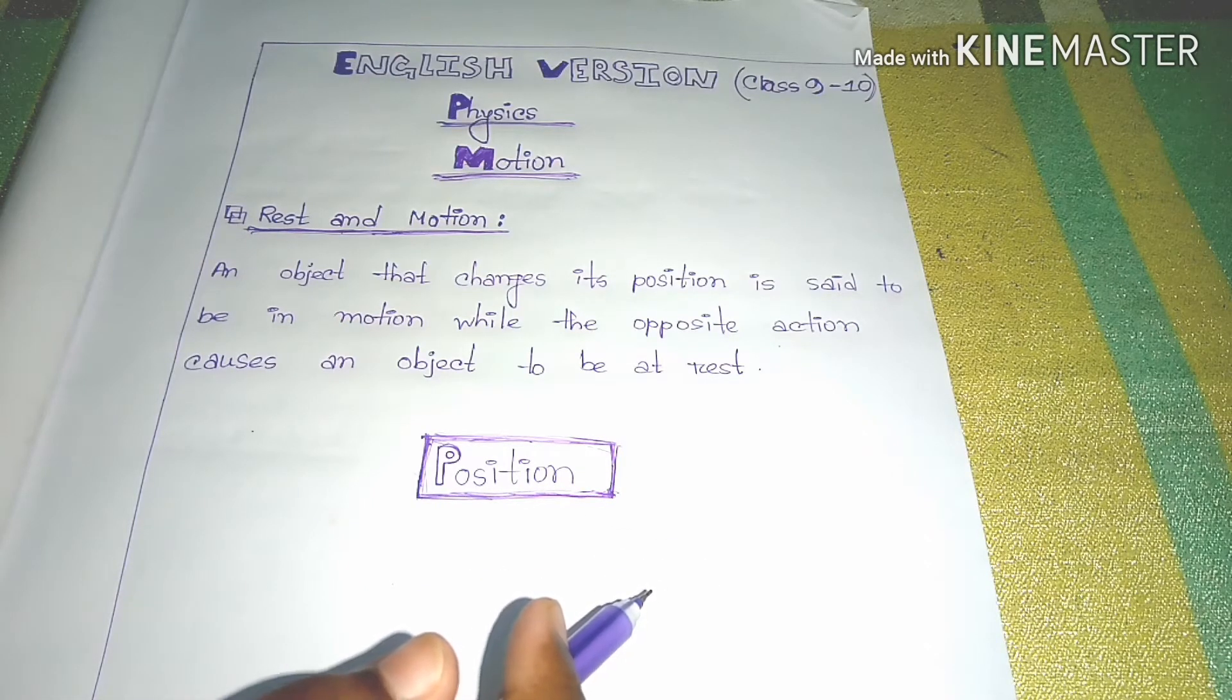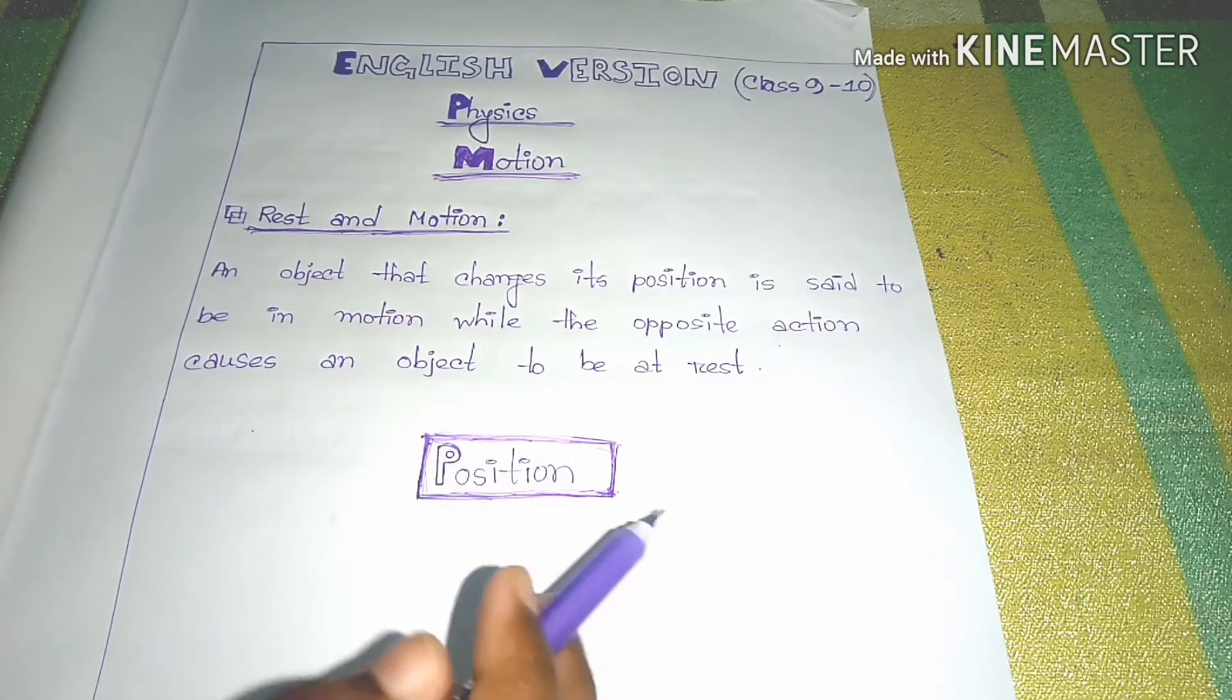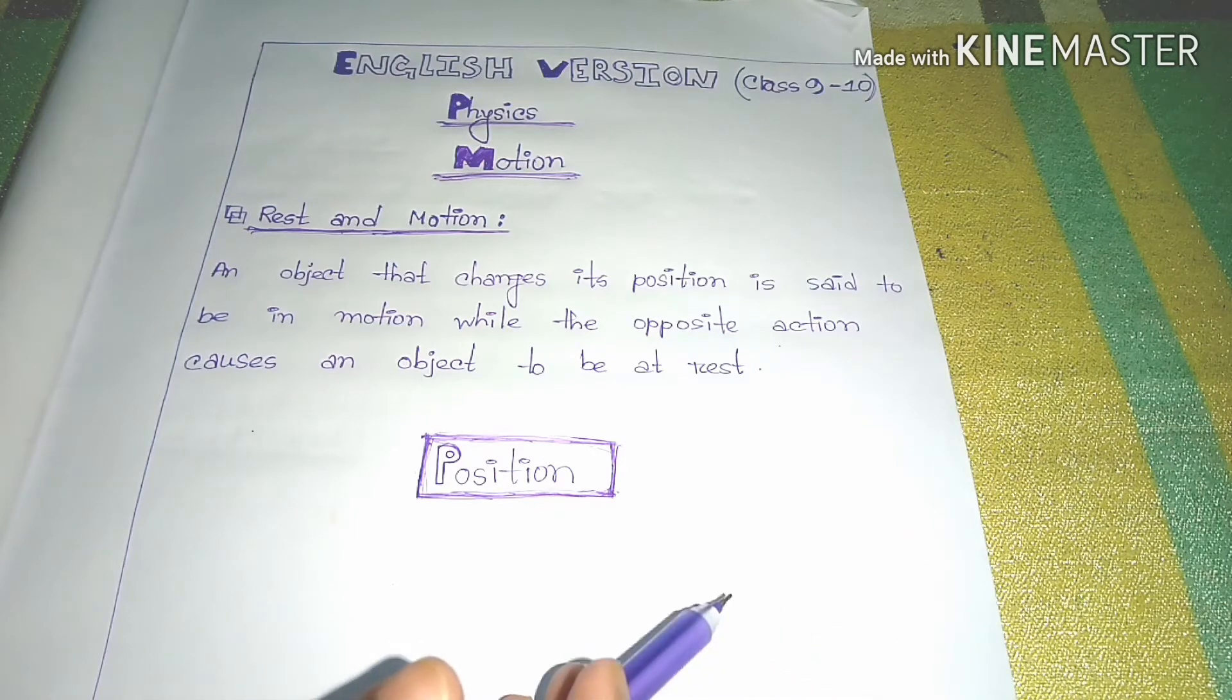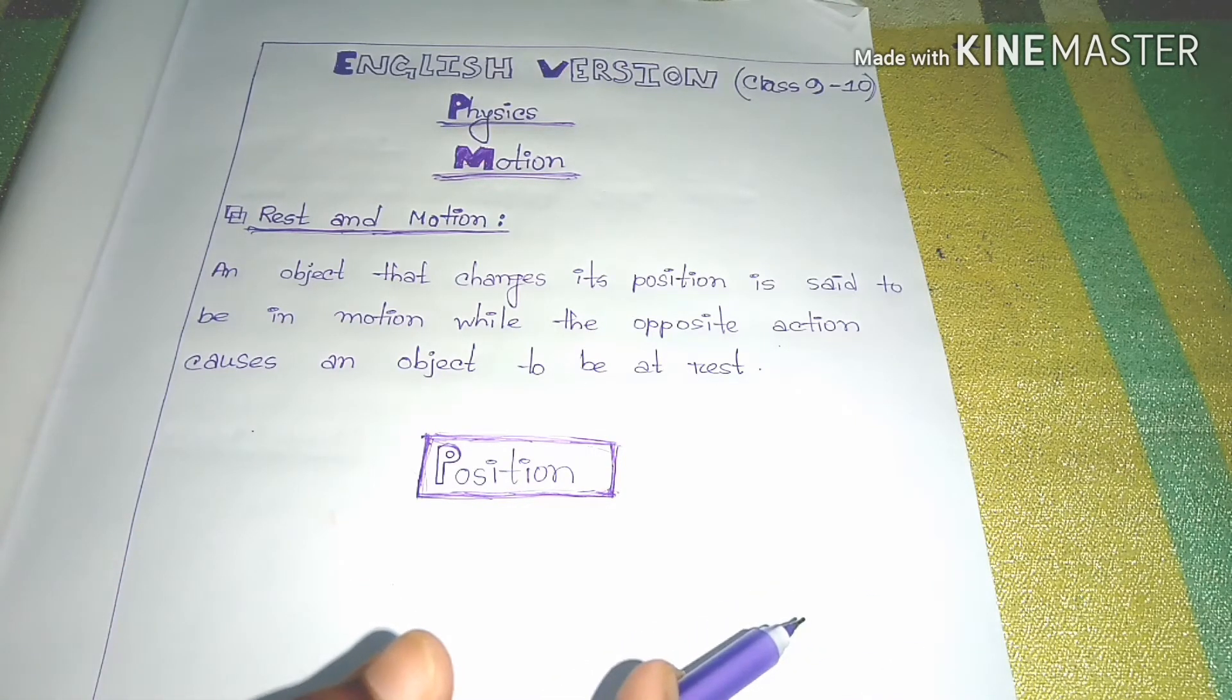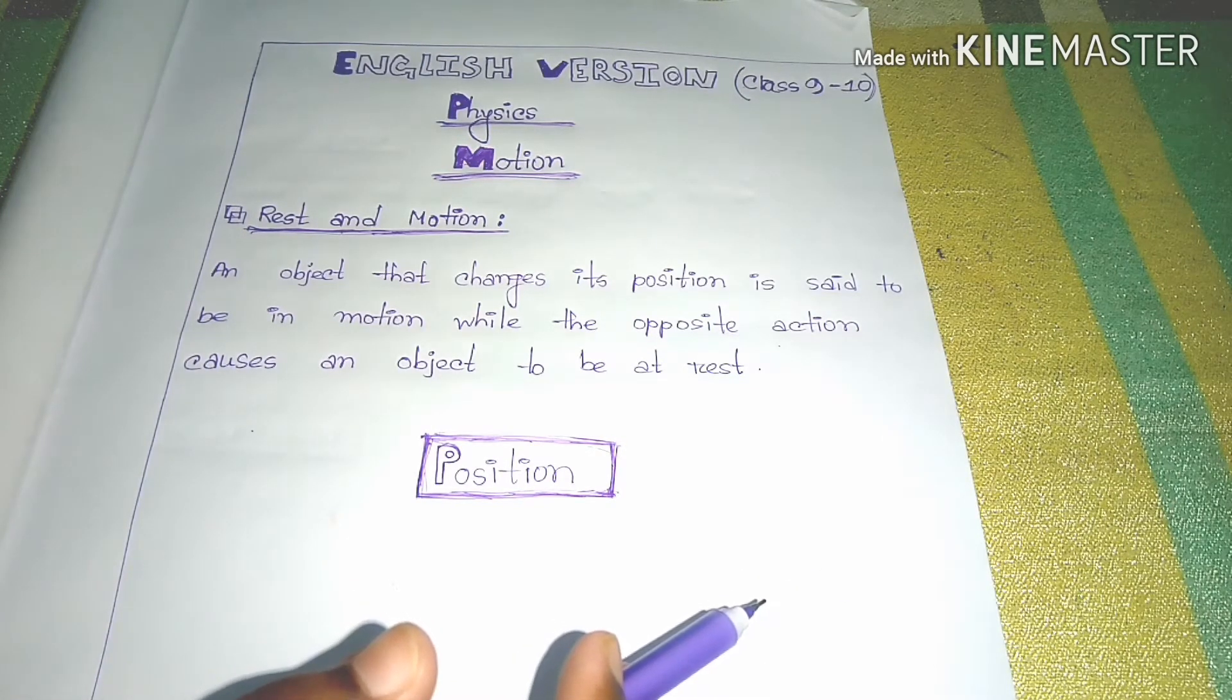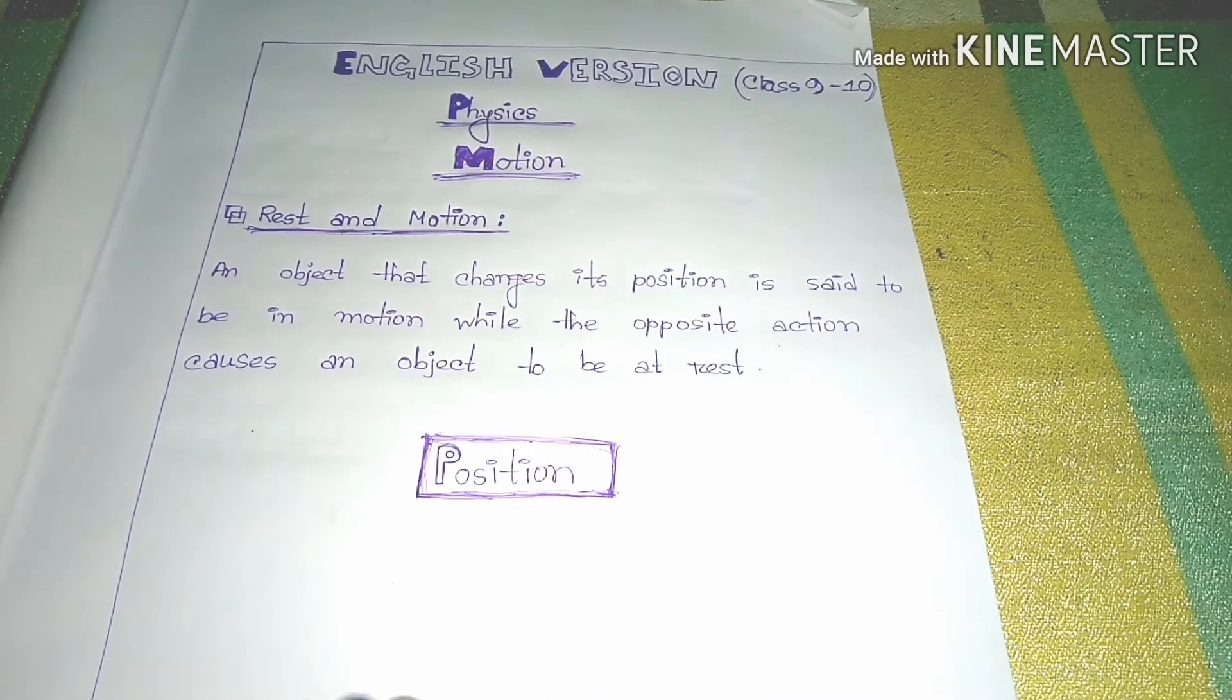Now we need to explain the term position. So what is position? If anyone asked you where is the position of your school and if you answer generally, your answer is correct but the position of your school remains unknown. In the term of physics, your answer is incorrect because the position of your school remains unknown.